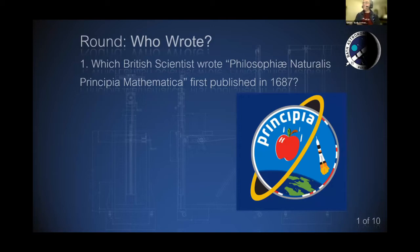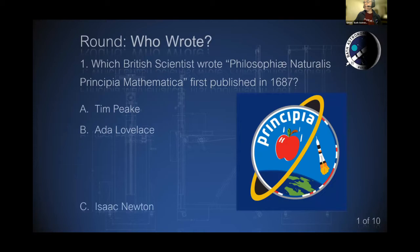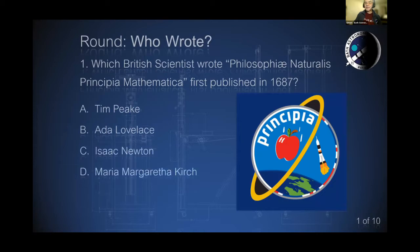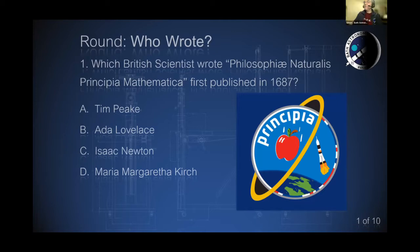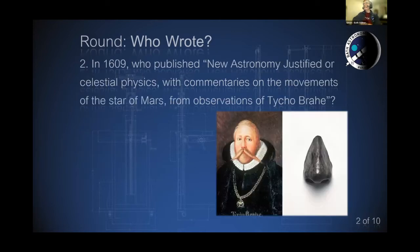So, which British scientist wrote Philosophiæ Naturalis Principia Mathematica, first published in 1687? Was it Tim Peake, was it Ada Lovelace, was it Isaac Newton, or was it Maria Margaretta Kirch? Which British scientist wrote Principia Mathematica?